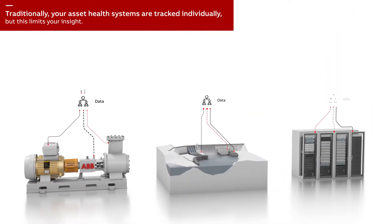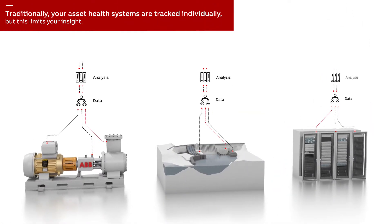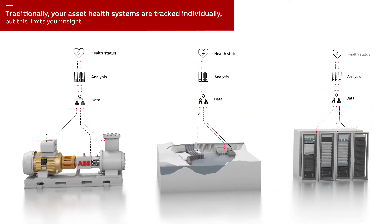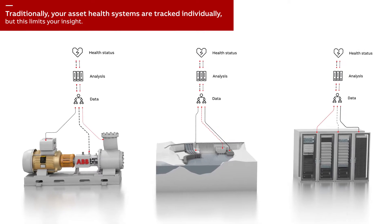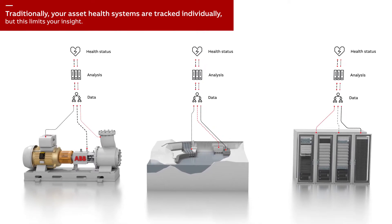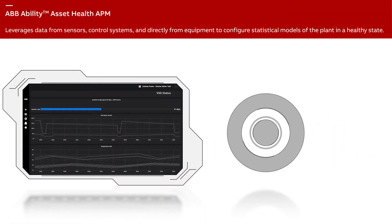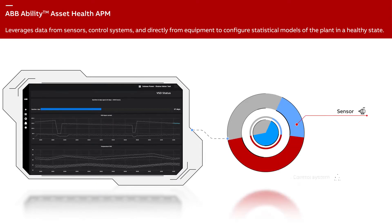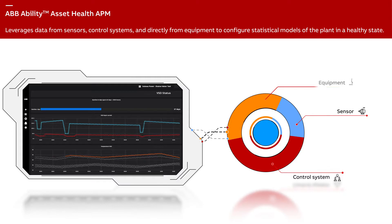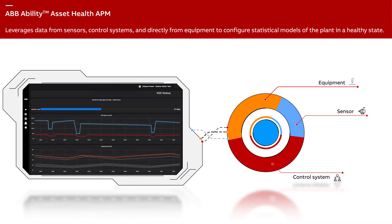Traditionally, your asset health systems are tracked individually, but this limits your insight. ABB Ability Asset Health APM leverages data from sensors, control systems, and directly from equipment to configure statistical models of the plant in a healthy state.